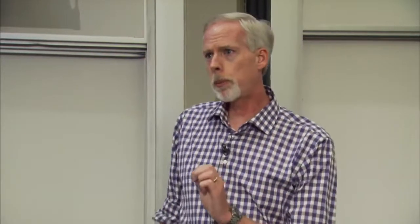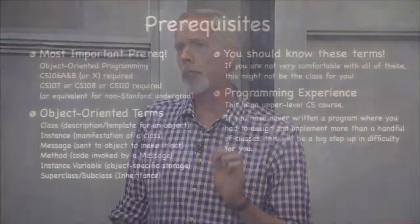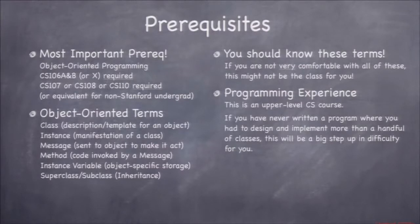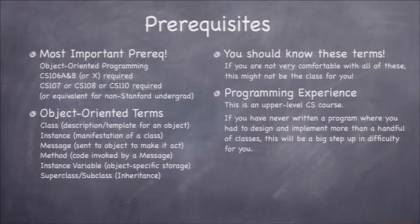The prerequisites for this class are super important. CS106A and B, or CS106X, are absolutely required. If you don't have that or equivalent, definitely don't think about it. The second requirement I've added this quarter, based on experience, is CS107, CS108 — which is great if you've taken it — or even CS110. Part of the reason I'm requiring these extra classes is just so you're further along the programming experience curve, because this class involves a lot of programming.